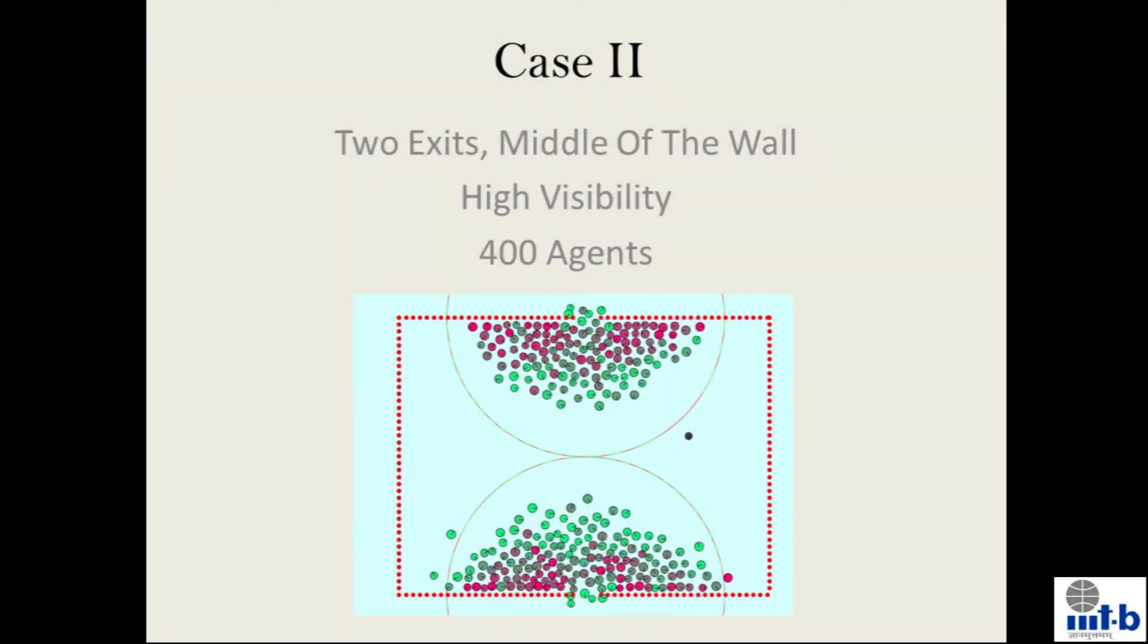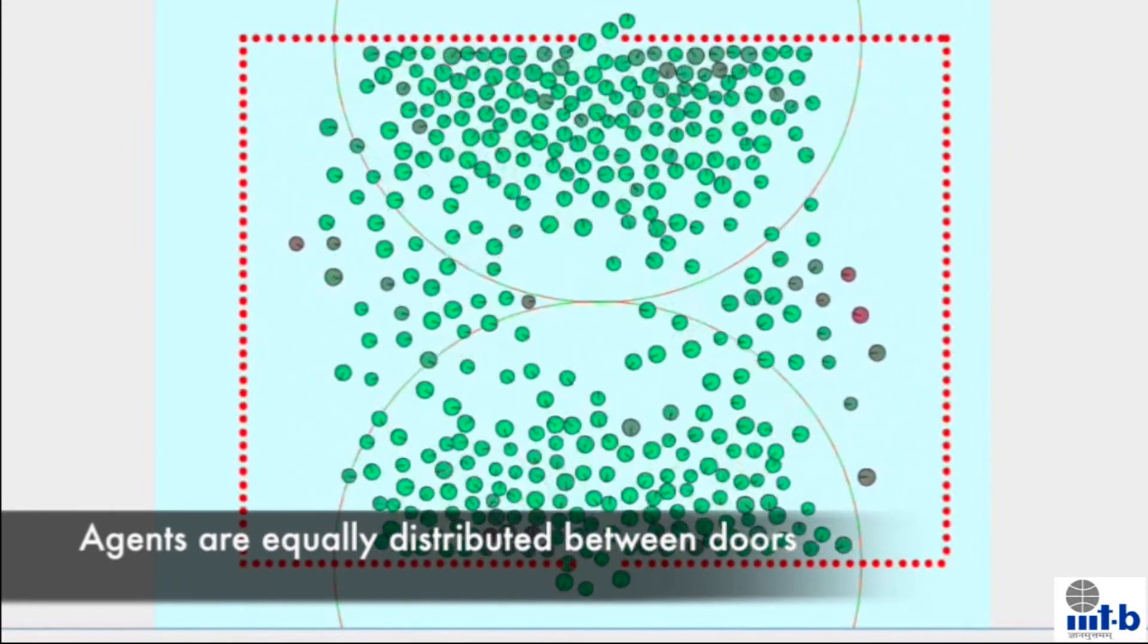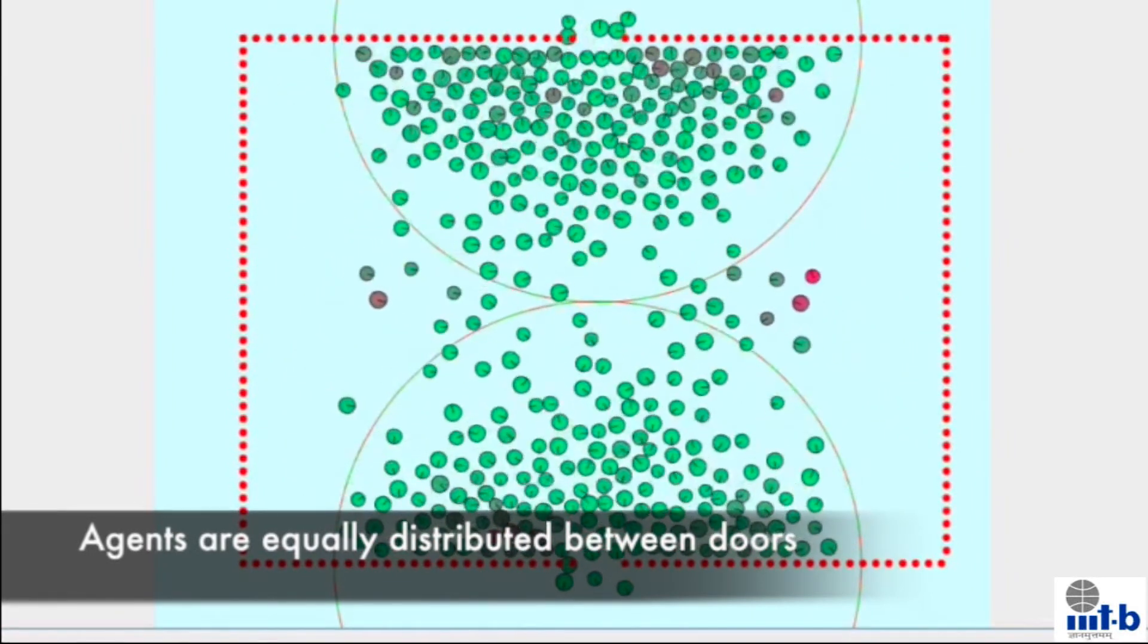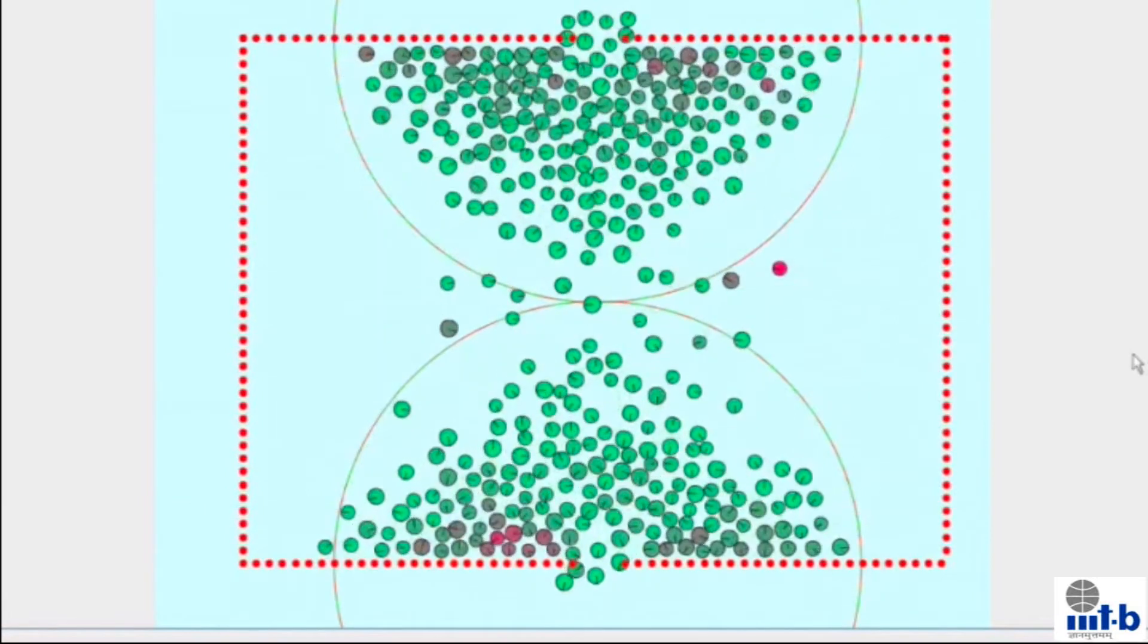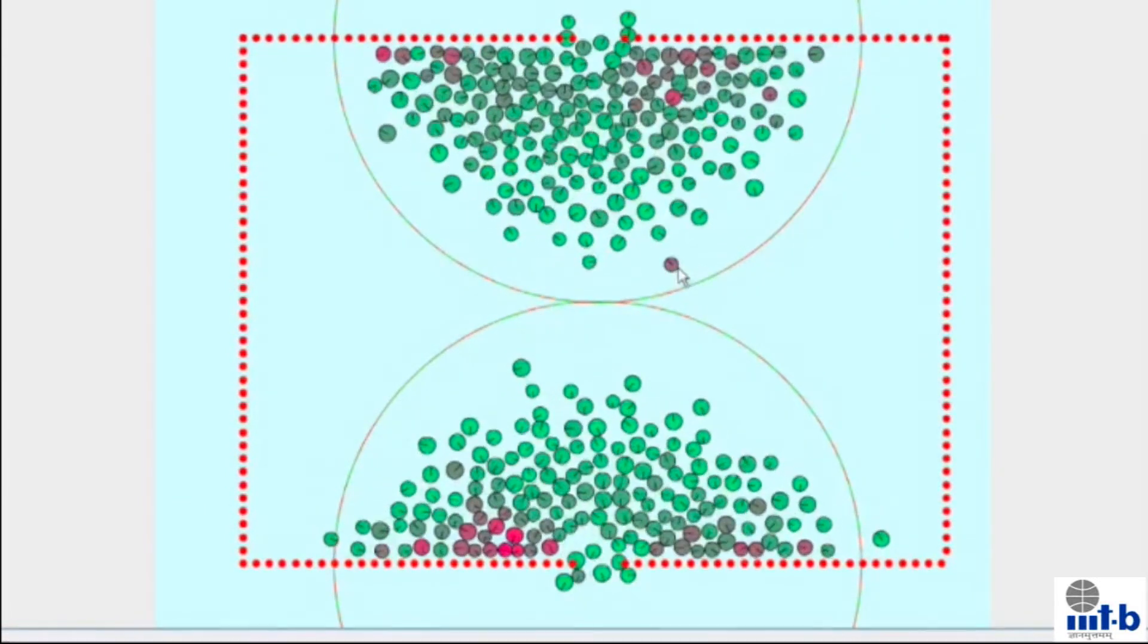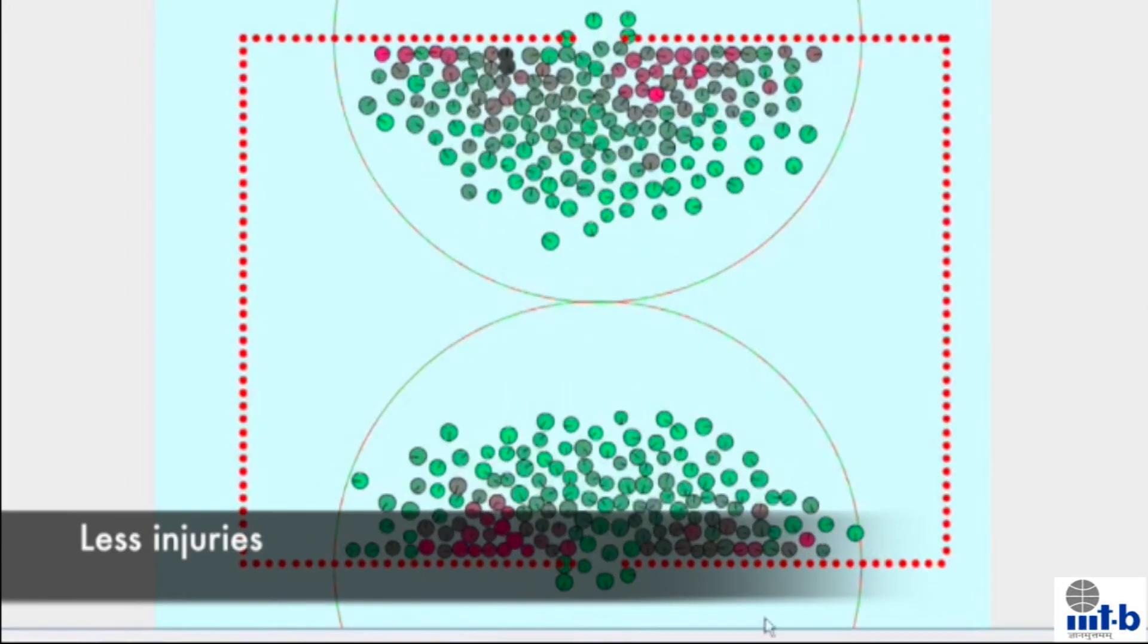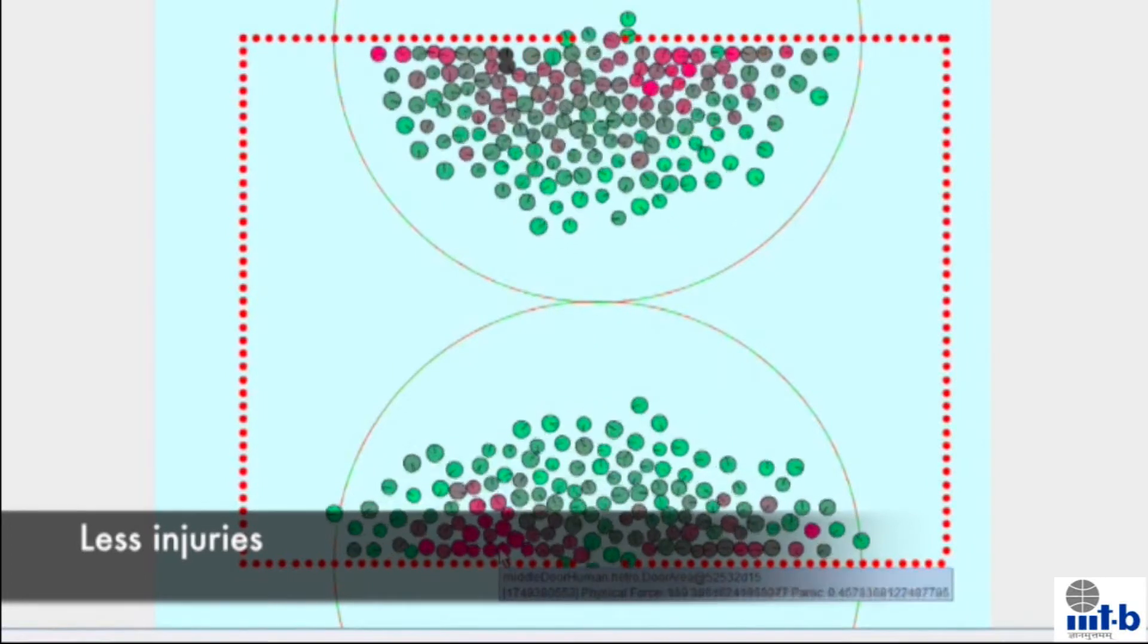In the following cases, we have studied the environment with two exit doors at different positions and also with different visibilities. In this case, both the doors are in middle of the room with high visibility, which means all the agents have information about both doors. We can clearly observe very less injuries and also evacuation time is less.